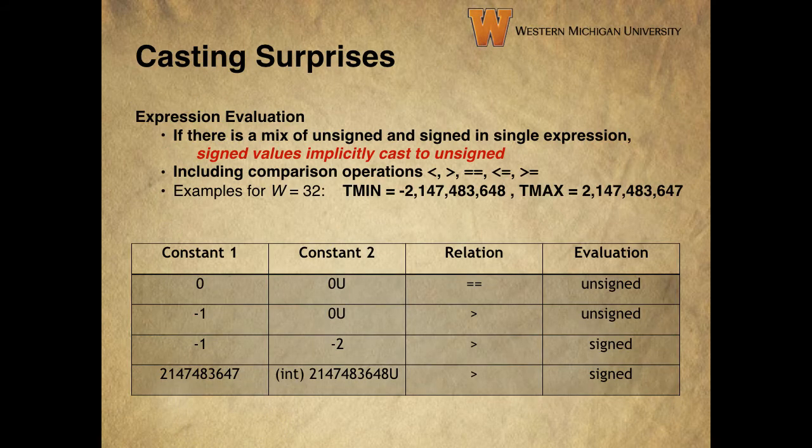What we find is that if there's a mix of signed and unsigned integers in a single expression, signed values get cast to unsigned. This happens with comparison operations such as less than, greater than, etc. as well. Take a look at this table of some values that show what happens when implicit casting comes into play.